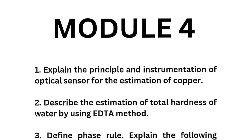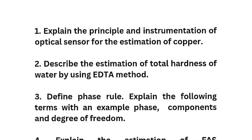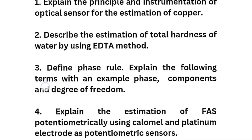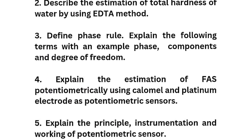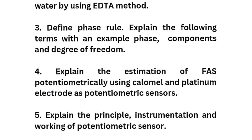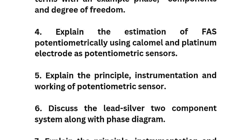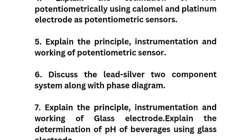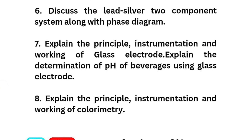Coming to module 4, which is again a scoring module. The super important questions are: First, explain the principle and instrumentation of optical sensor for the estimation of copper. Second, describe the estimation of total hardness of water by using the EDTA method. Third, define phase rule and explain the terms phase, components, and degree of freedom with an example. Fourth, explain the estimation of FAS potentiometrically using calomel-platinum electrode as potentiometric sensors.